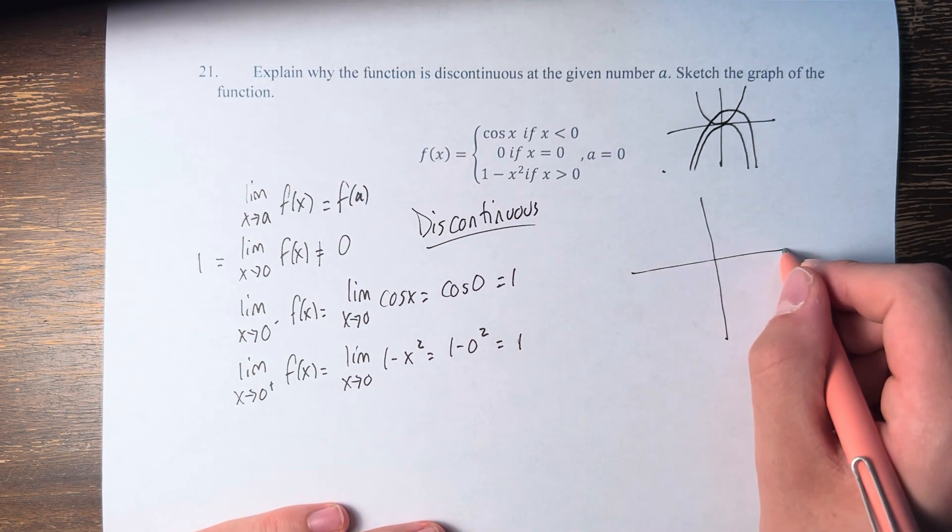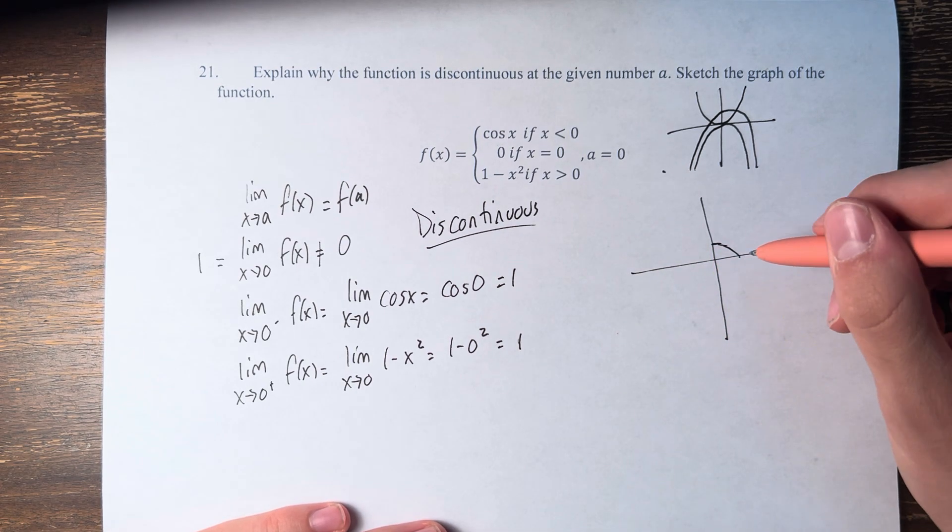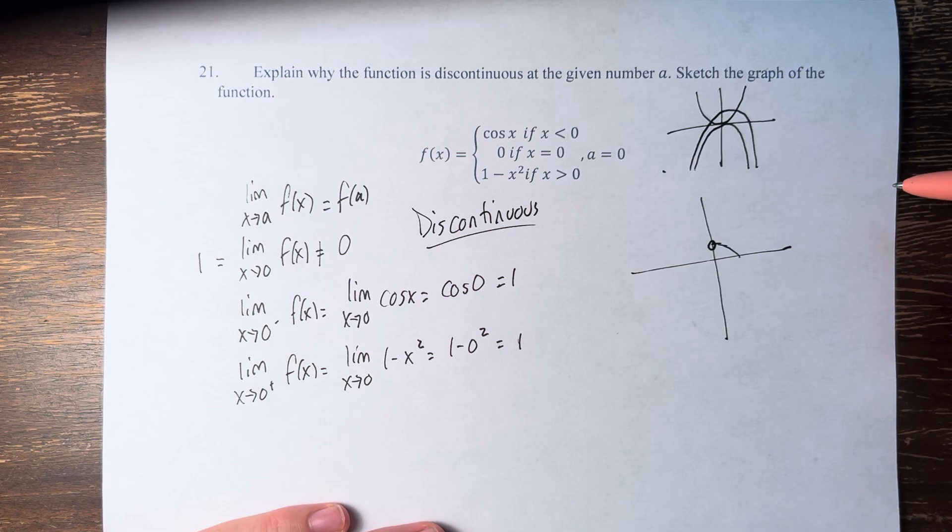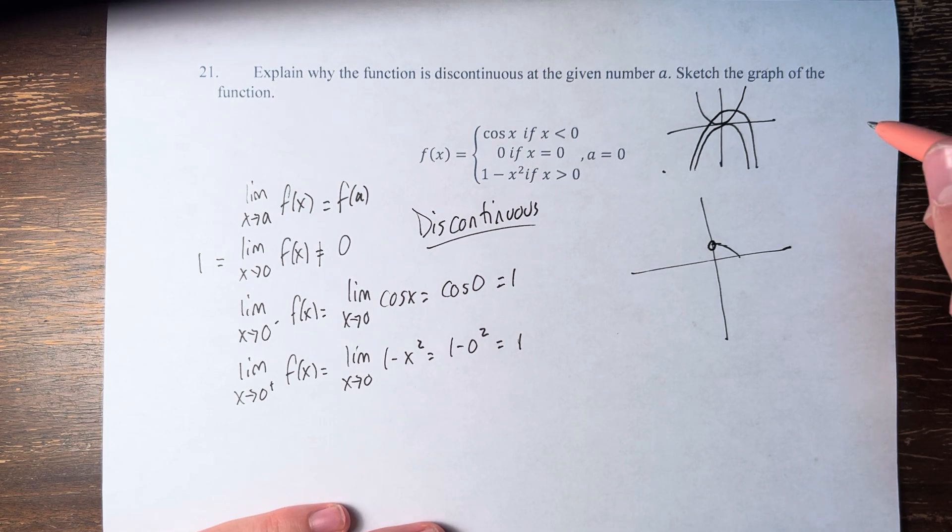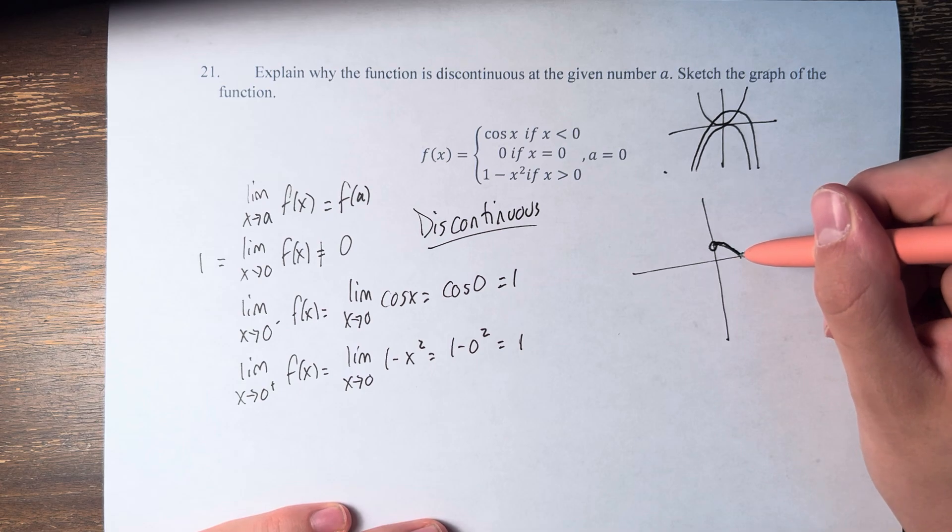When we're actually drawing our function, we have for x is greater than 0, starting at 0 with an open circle to denote that the function does not equal 1 minus x squared at x equals 0. We have this function.